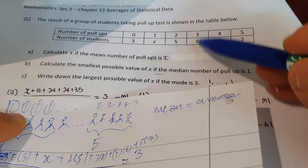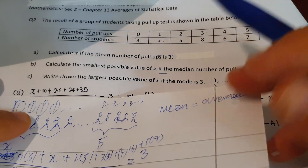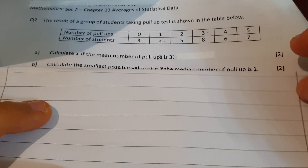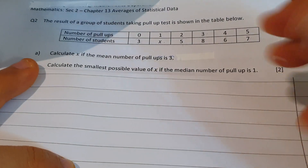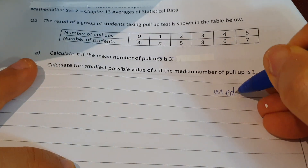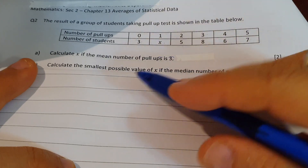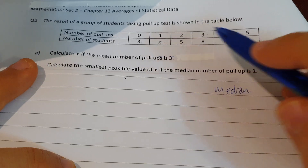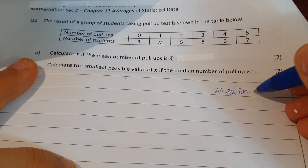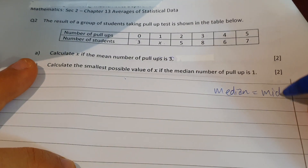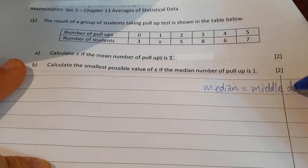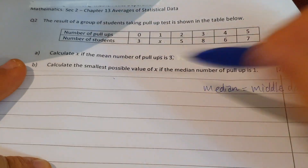Now the next part is a little harder — finding the median. The median is the middle data value. Here the data we're talking about is the number of pull-ups, not the number of students. So the median refers to the middle number of pull-ups.